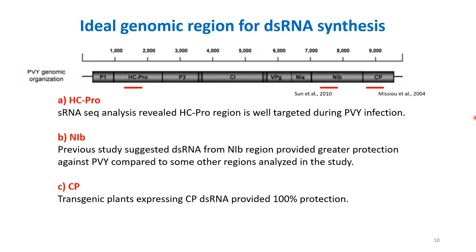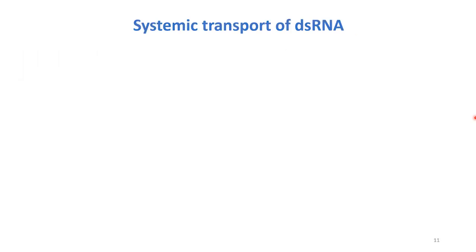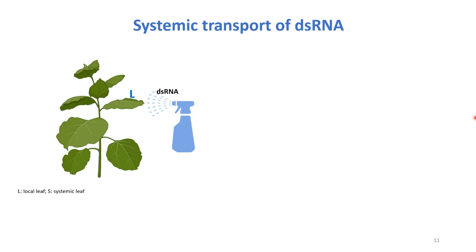Now I know from which region to synthesize my dsRNAs. I have my dsRNA, and the next thing I want to check is whether the dsRNA I'm topically applying is systemically transported or just stays on the leaf where I'm applying it — because I want the entire plant to be protected. To check this, I applied dsRNA to a leaf designated as L, and then tried to detect dsRNA in a systemic leaf — a newer leaf one whorl on top. After application I collected leaf disks from the local and systemic leaf, extracted RNA, and did RT-PCR to detect my dsRNA.